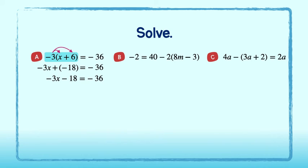Okay, now let's start to solve. First, add 18 to both sides to get negative 3x equal to negative 18. Then, divide both sides by negative 3 to get x equal to 6.